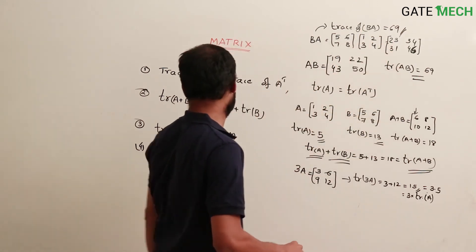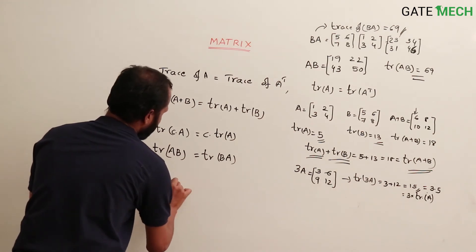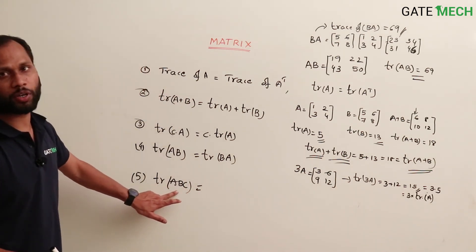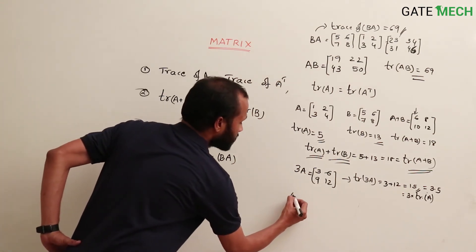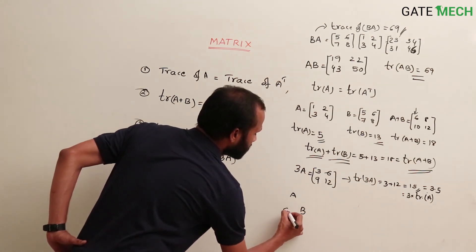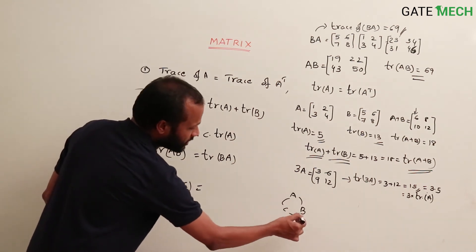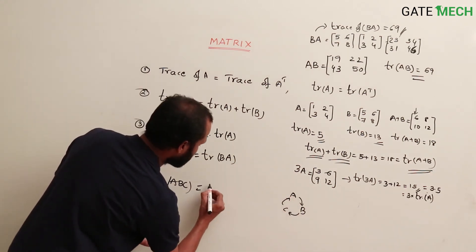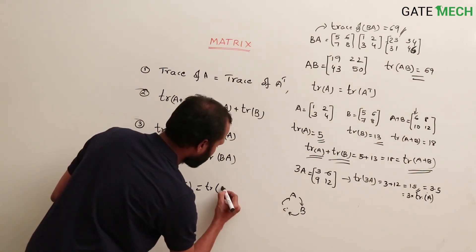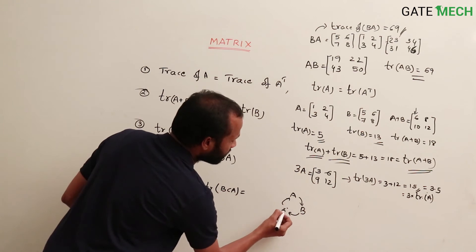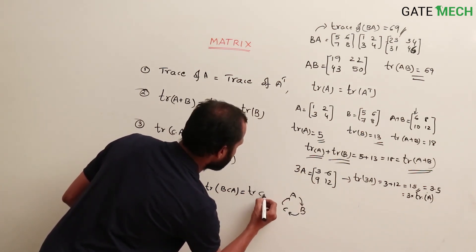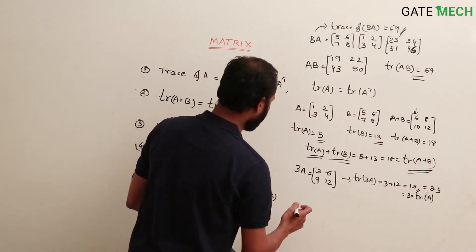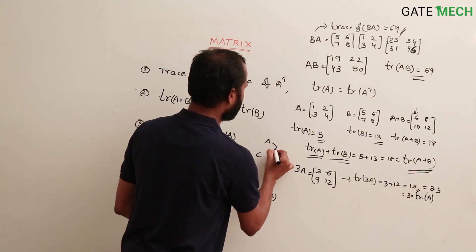Trace of AB equals trace of BA. For higher order products like ABC, you should not change the order in which the matrices are multiplied. Think of it as a circular pattern — A, B, C in a circle. You can start from any matrix but must maintain the cyclic order: trace of ABC equals trace of BCA equals trace of CAB.